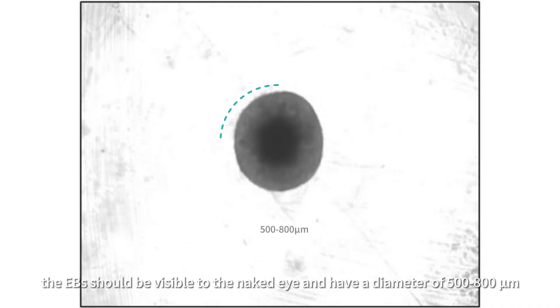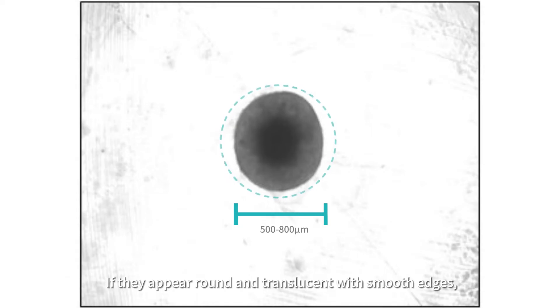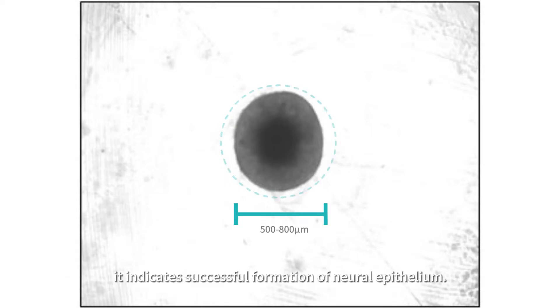After this time, the EBs should be visible to the naked eye and have a diameter of 500 to 800 microns. If they appear round and translucent with smooth edges, it indicates successful formation of neural epithelium.